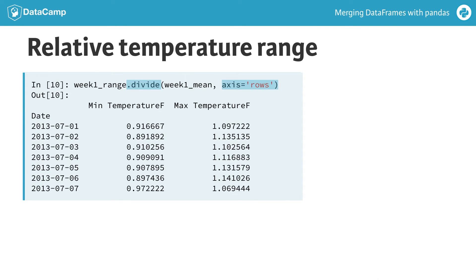We can see the temperature range varies by at most about 10% from the mean in that week.